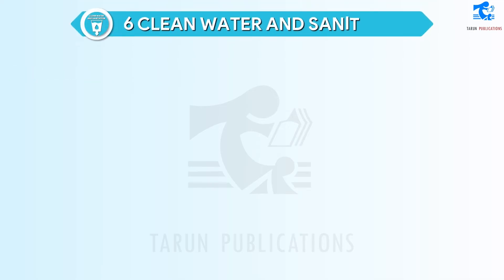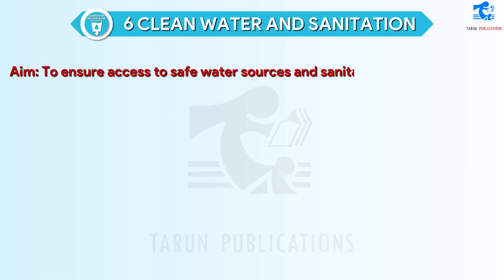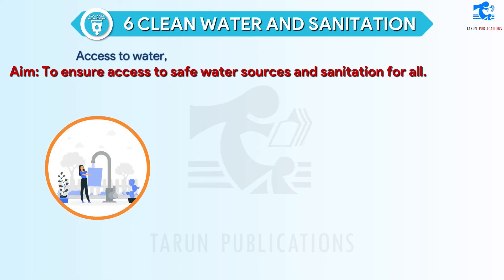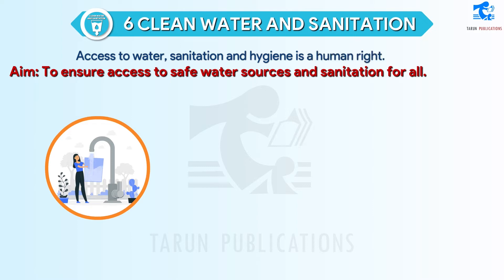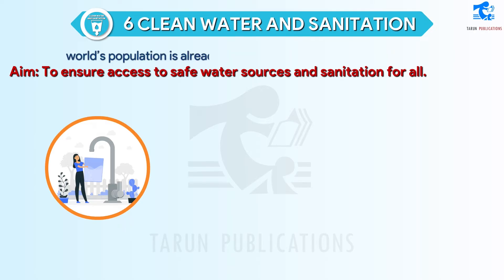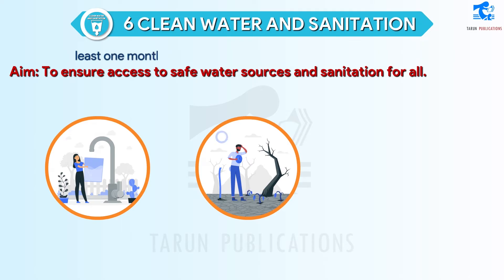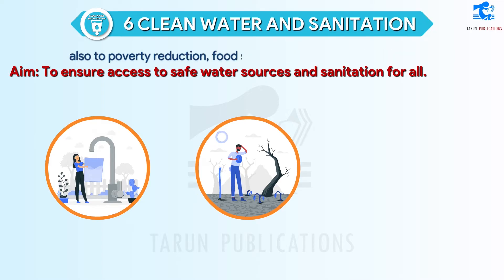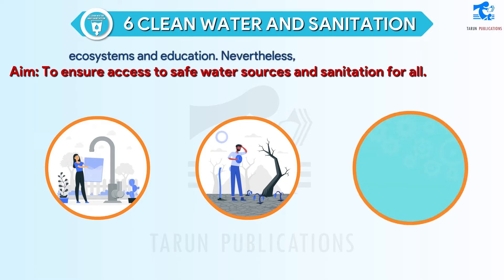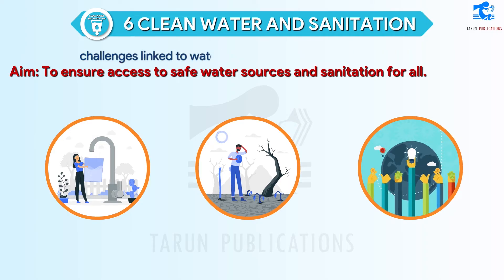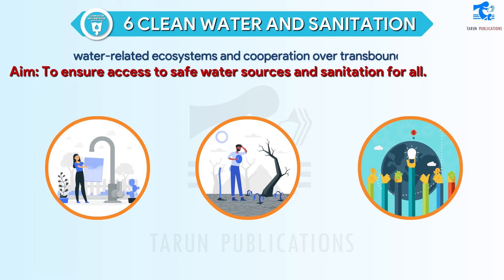SDG 6: Clean Water and Sanitation. Aim: to ensure access to safe water sources and sanitation for all. Access to water, sanitation and hygiene is a human right. The demand for water has outpaced population growth, and half the world's population is already experiencing severe water scarcity at least one month a year. Water is essential not only to health, but also to poverty reduction, food security, peace and human rights, ecosystems, and education. Nevertheless, countries face growing challenges linked to water scarcity, water pollution, degraded water-related ecosystems, and cooperation over transboundary water basins.